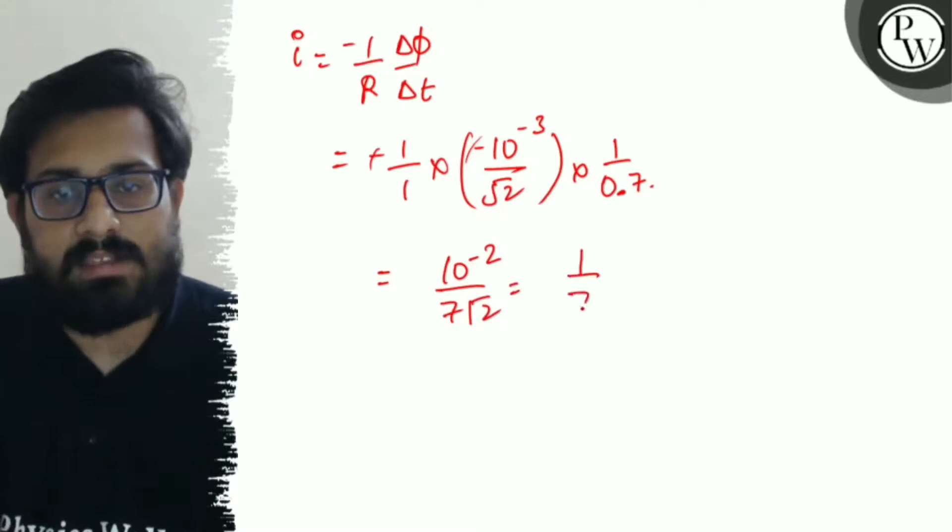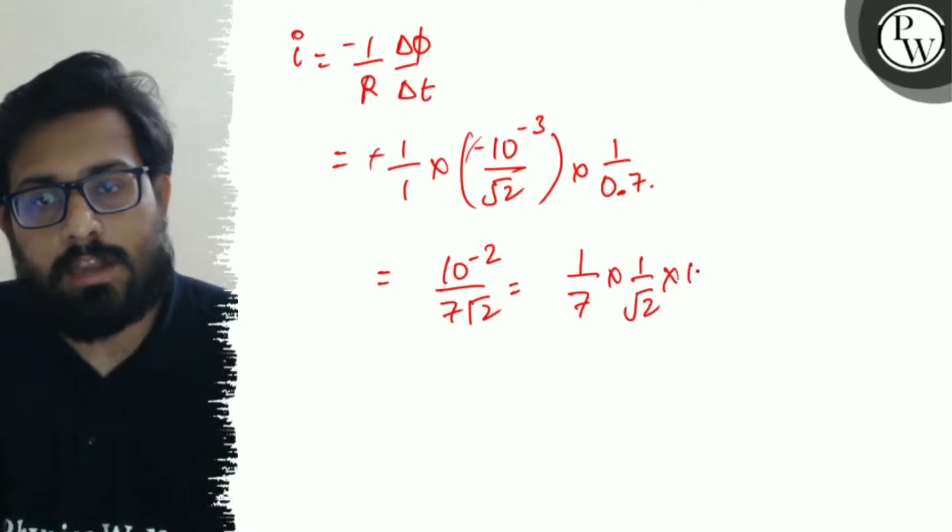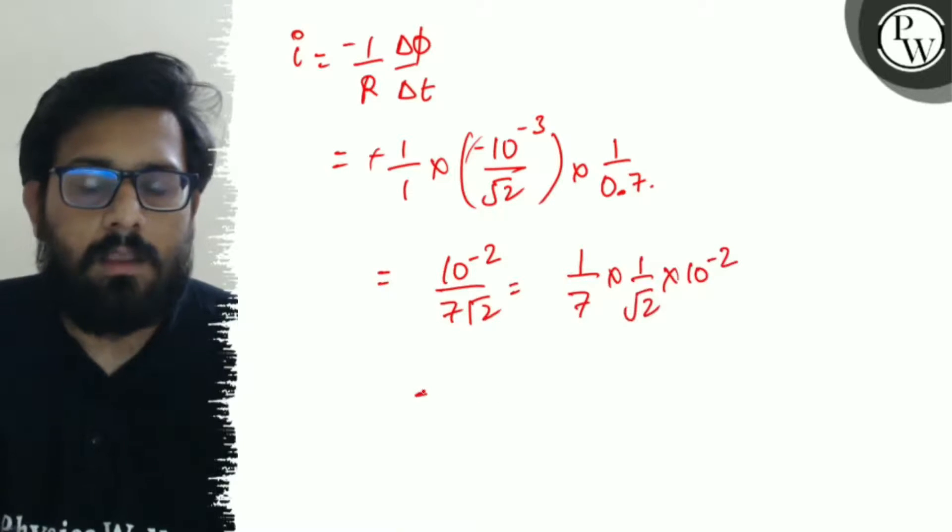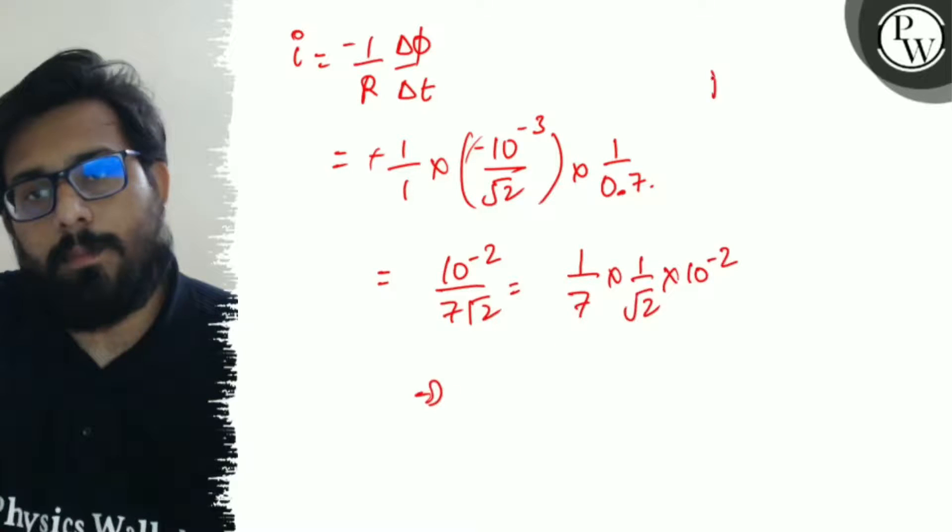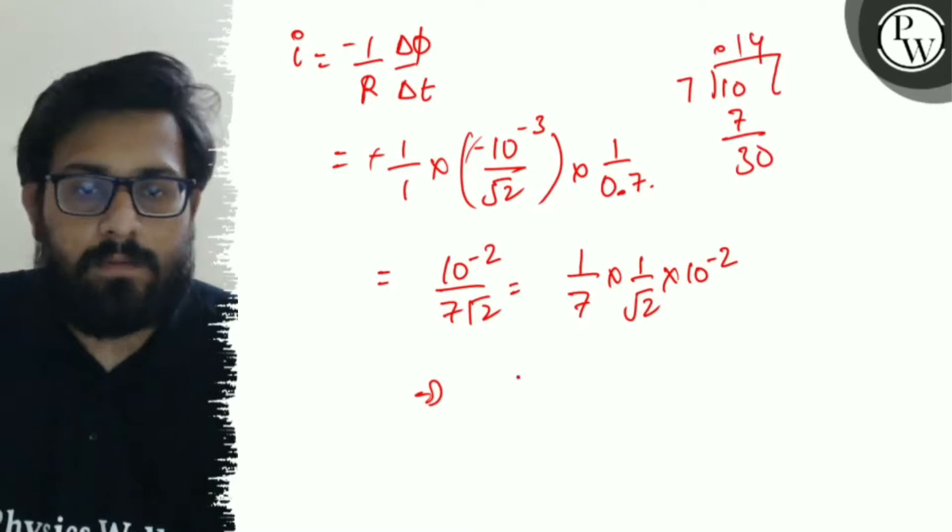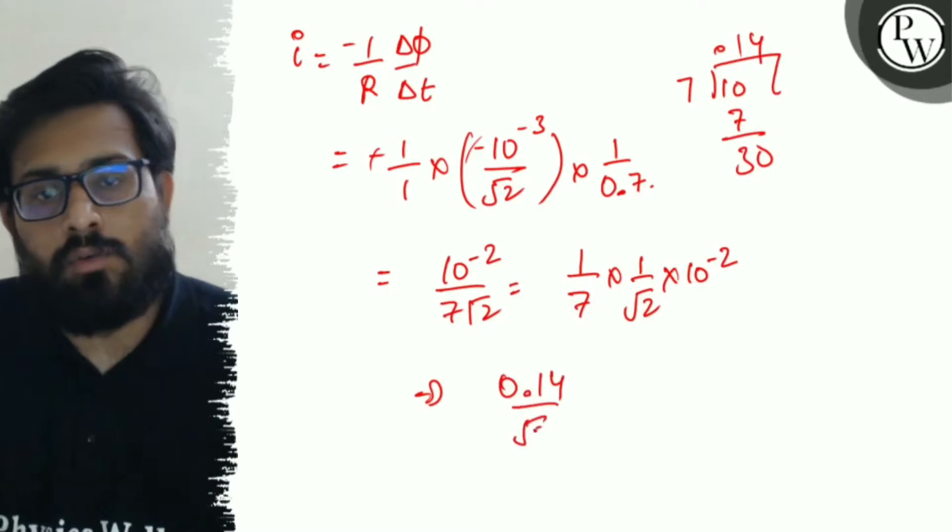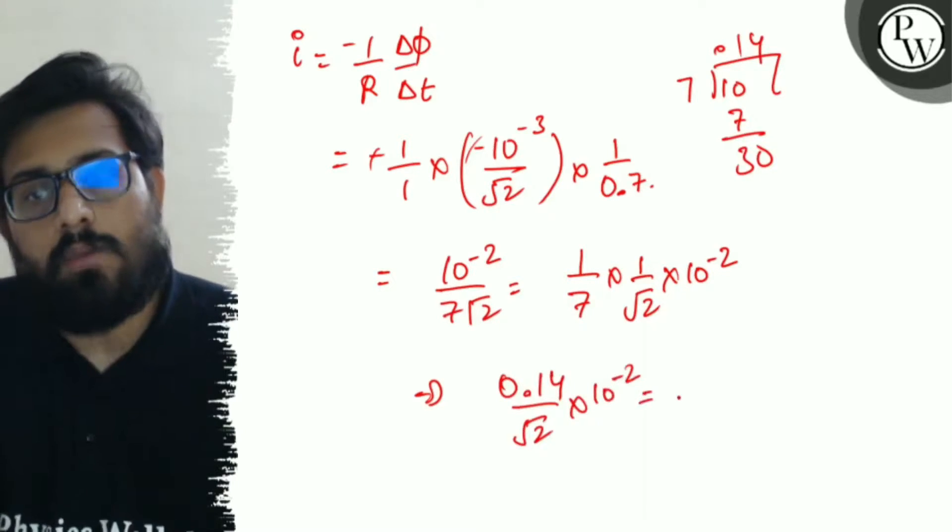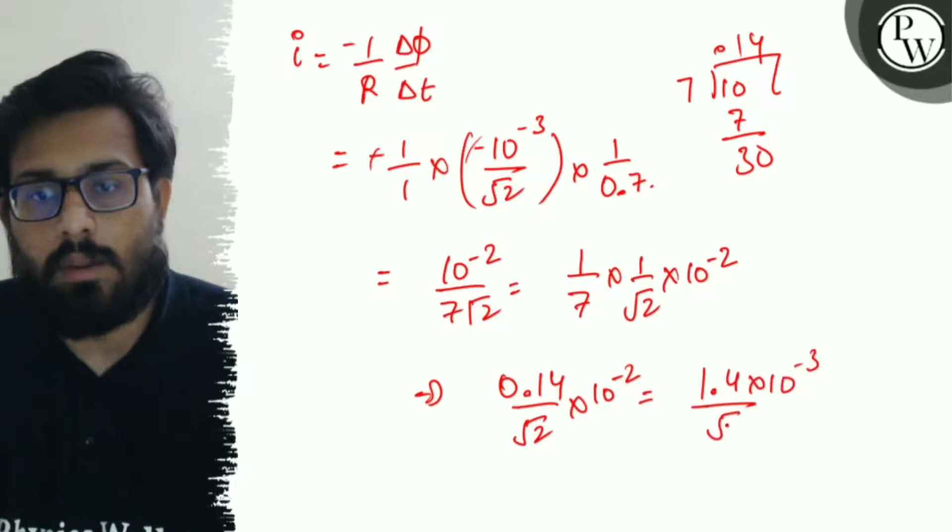So 1 by 7 into 1 by root 2 times 10 to the minus 2. This comes out to be 0.14 by root 2 into 10 to the minus 2, which can be written as 1.4 into 10 to the minus 3 by root 2.